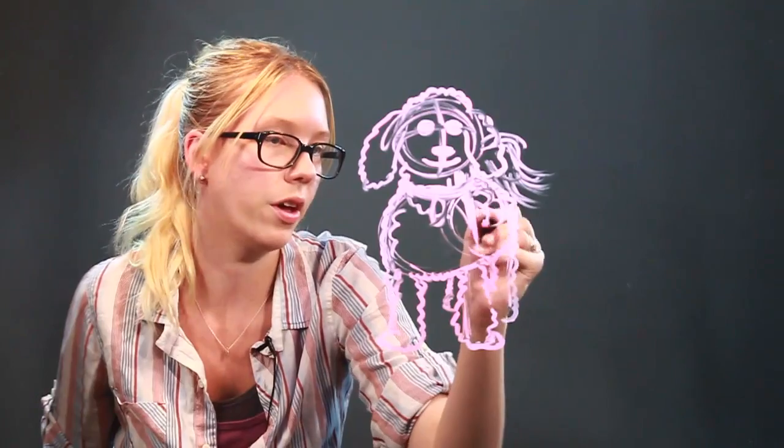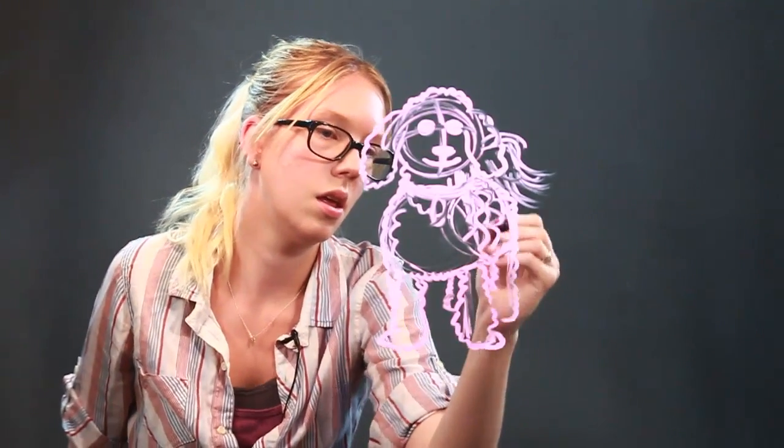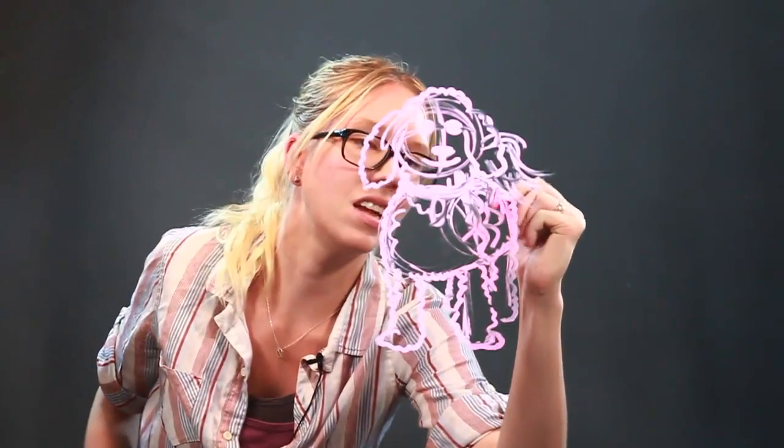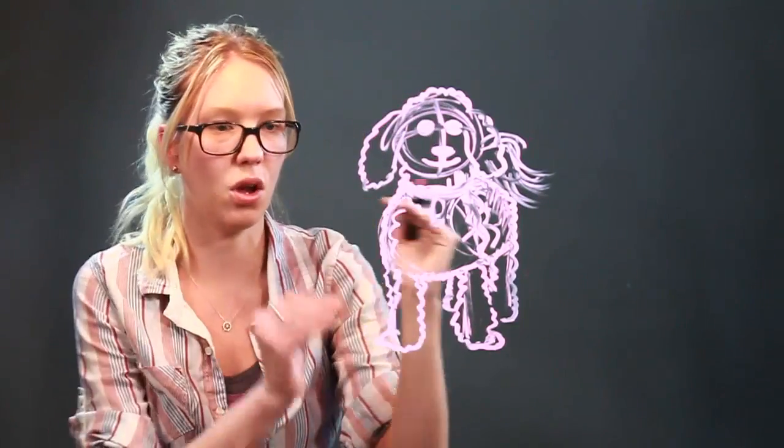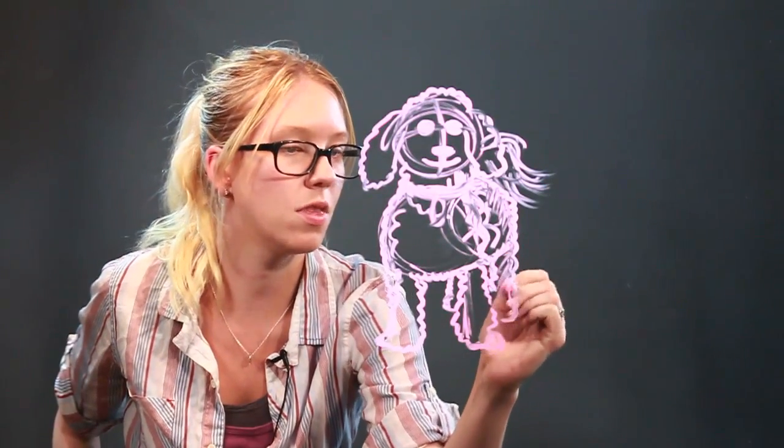And then just add all the curls in. If you want to shade it a little bit, I'd shade the back just so it looks like it's going backwards. Same with the back legs.